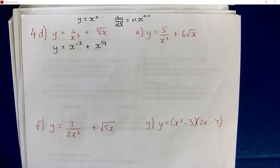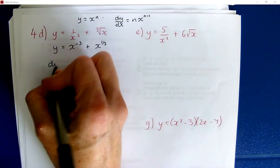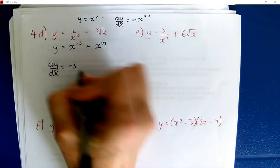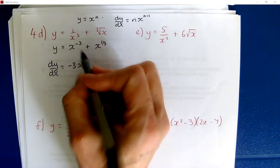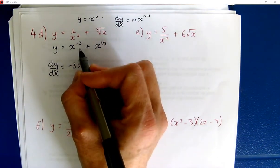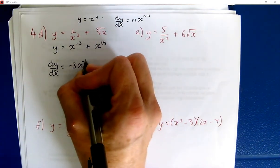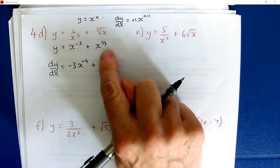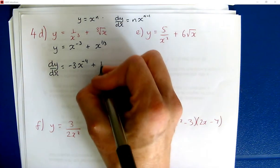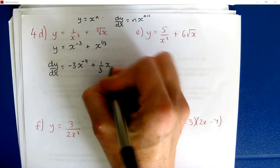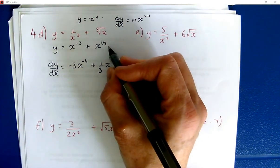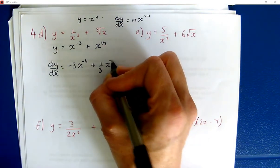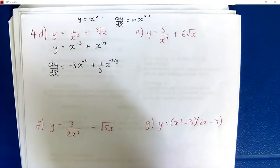Now I'm ready to differentiate. So dy/dx: we bring down the power, that's negative 3, we write x, and we reduce the power by 1 — so negative 3 take away 1 is negative 4. And we've got a plus. The next one: we bring down the power, that's one third, we write x, and reduce the power by 1. So one third take away 1 whole is negative two thirds.